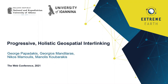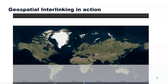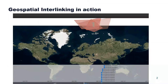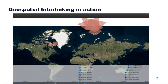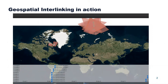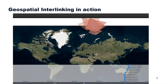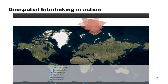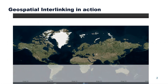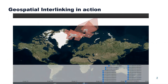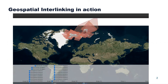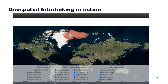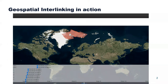Geospatial interlinking is a common task which aims to associate pairs of geometries with topological relations. As an example, consider a real application from the Extreme Earth Research Project where we associate in-situ observations about icebergs with satellite images from Copernicus.